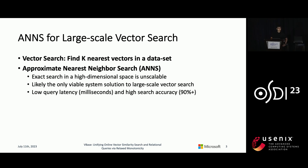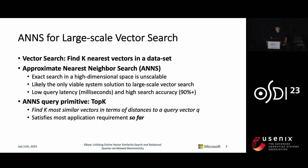In reality, exact search has proven to be extremely expensive and unscalable. Therefore, people often resort to approximate search algorithms to sacrifice a little bit of search accuracy for much better search performance. Today, approximate nearest neighbor search, or ANN, is likely to be the only viable solution to serve vector search on large-scale data sets with second-level latency and a relatively high accuracy.